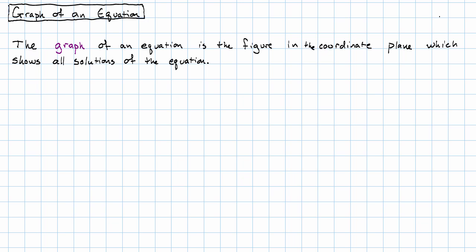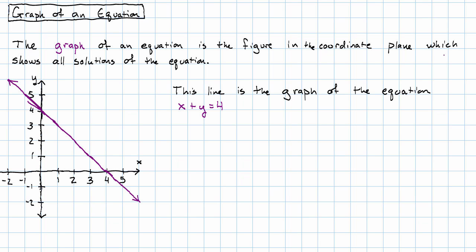I'm going to just draw a graph as an example, and in upcoming videos we'll talk about how we actually get that graph. This line is the graph of the equation x plus y equals 4. What does that mean? That means that every point on the line is a solution of the equation.